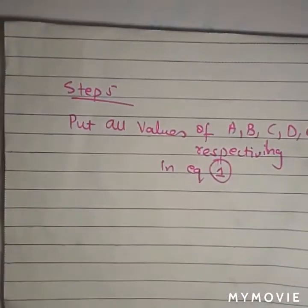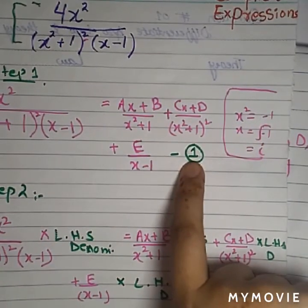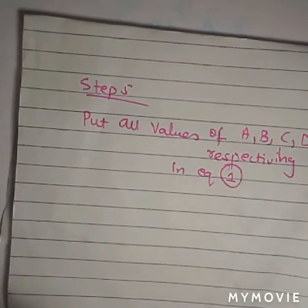Now what you have to do is follow the step which is: put all the values A, B, C, D, E. Step 5 is the most important step followed by all students when solving partial fractions.